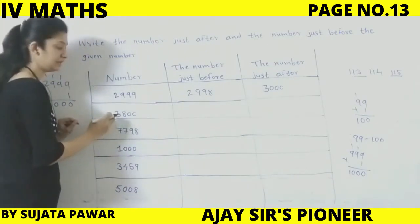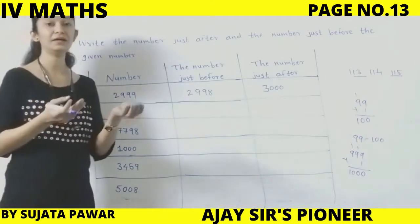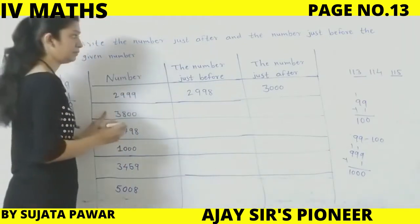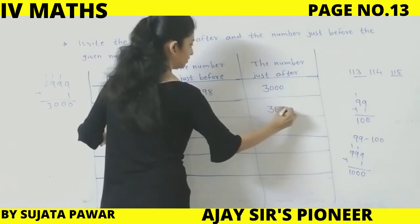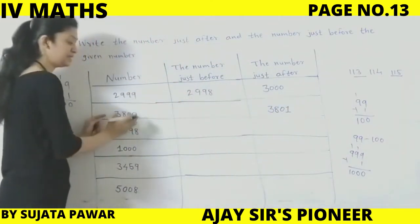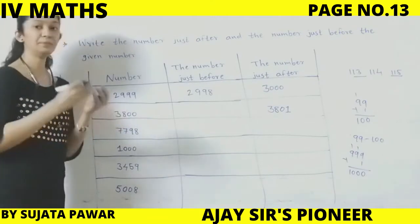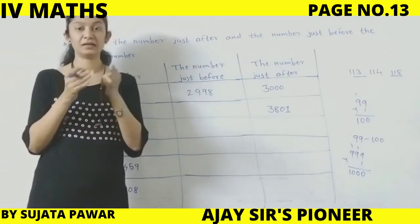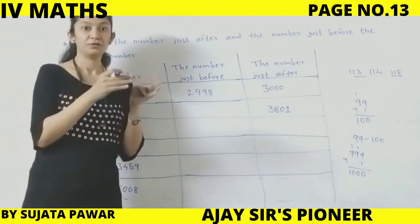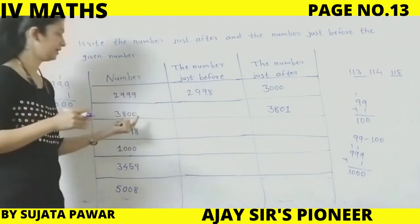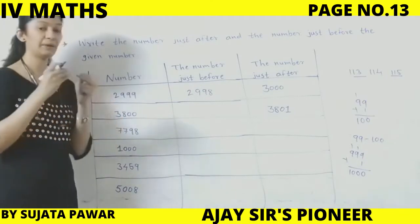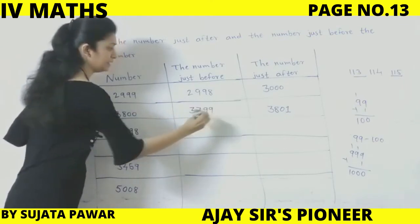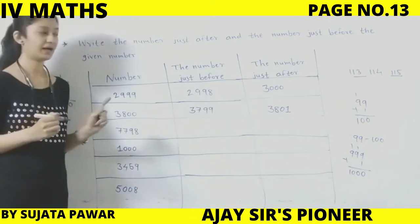Next: 3800. Simply, 3800 — 800 after is 801, so we write just after as 3801. Now before: 800 before is 799 — 8 ke pehle 7 aata hai, so 3799. Just before is 3799 and just after is 3801. Humein usi number ka after and before karna hai — sirf ek step aage ya peeche.